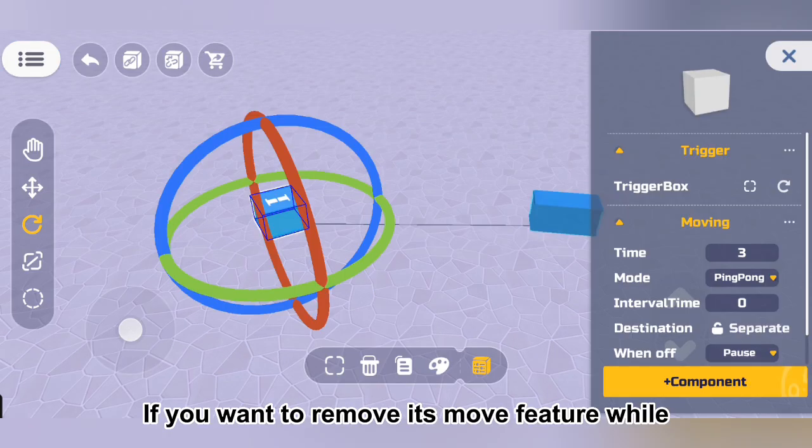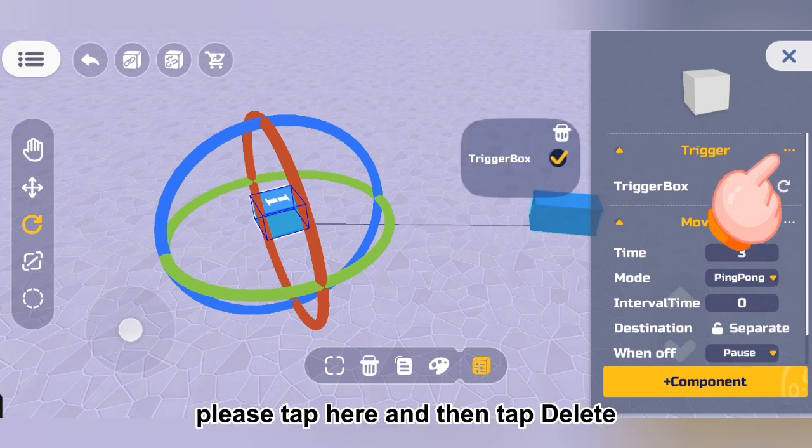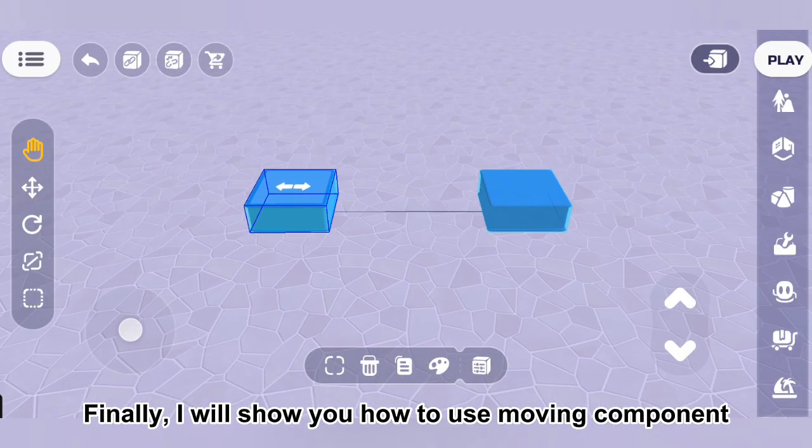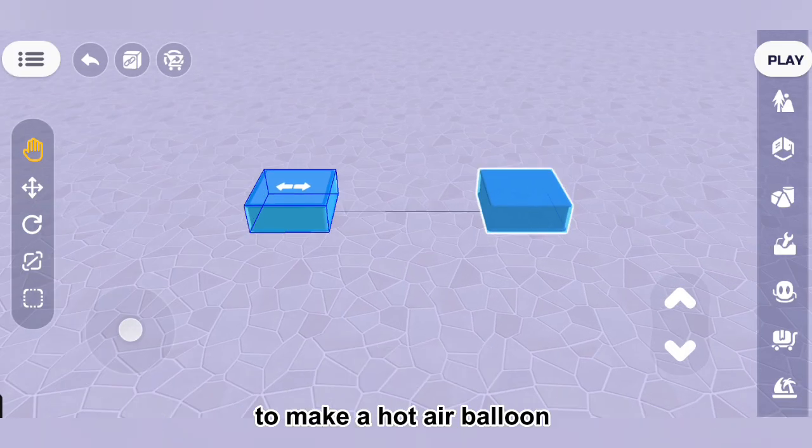If you want to remove its move feature while keeping the object, please tap here and then tap delete. Finally, I will show you how to use moving component to make a hot air balloon fly into the sky.